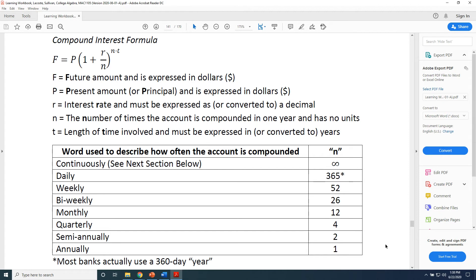Quarterly, we already talked about four quarters in a dollar. So quarterly means n equals four. Twelve months in a year, so n equals twelve.